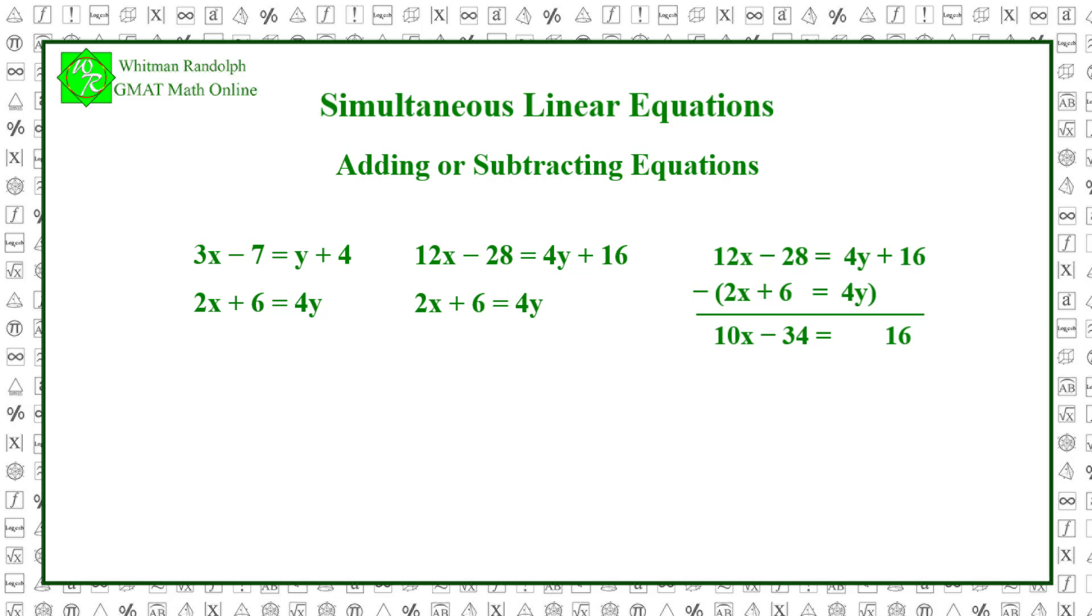Now we solve the resulting equation for x. 10x minus 34 plus 34 equals 16 plus 34. So 10x equals 50 and x equals 5. This is the same value we got for x when we used the substitution method. If we now plug 5 in for x in either equation and then solve for y, we get y equals 4, which of course is the same value we got for y using the substitution method.